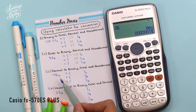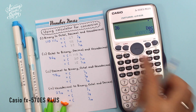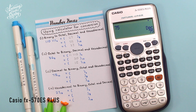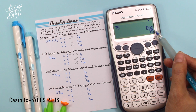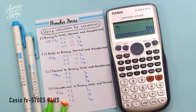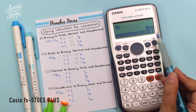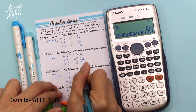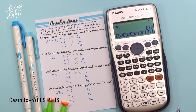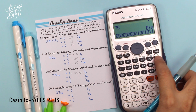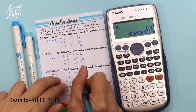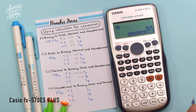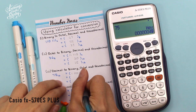Next, convert decimal — 75 base 10 — to base 2, base 8, and base 16. Base 10 is DEC, so I press DEC, enter 75, and press equals. To change to binary, press BIN — it's 1001011 base 2. To convert to base 8, press OCT — it's 113 base 8. And hexadecimal, base 16, press HEX — it's 4B.